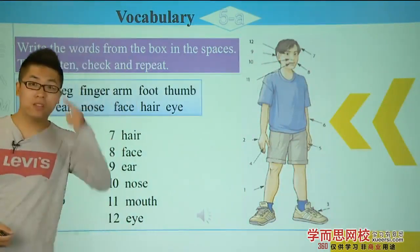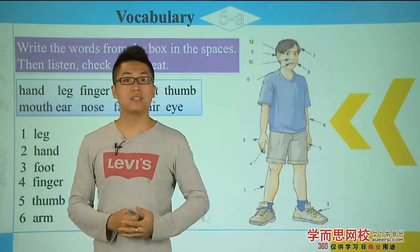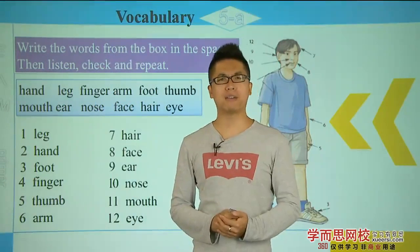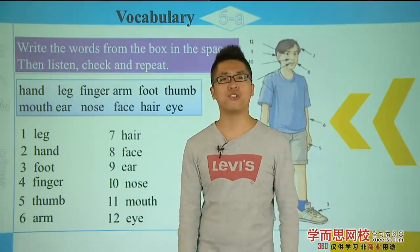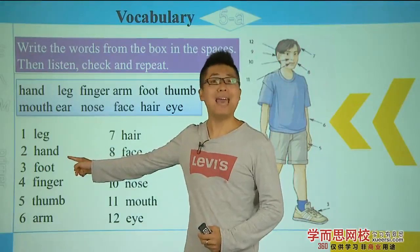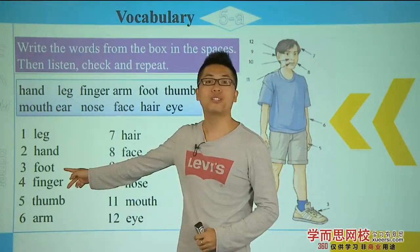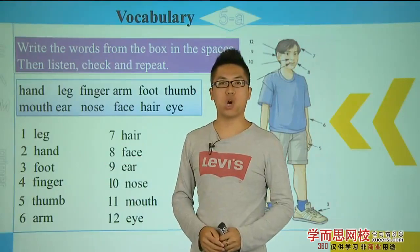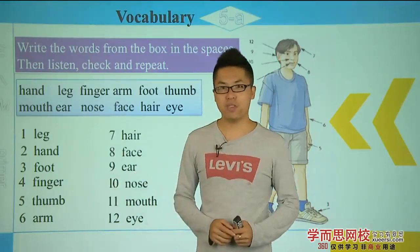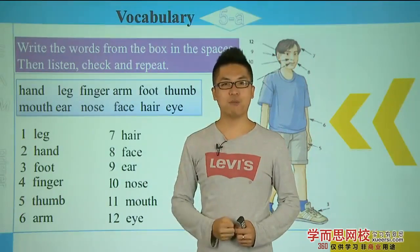Now let's read all twelve parts again. Number one: leg — show me your right leg! Two: hand — show me your left hand. Three: foot — show me your right foot. Four: finger — show me your index finger, your little finger, and your thumb. Five: thumb.